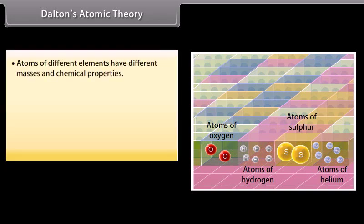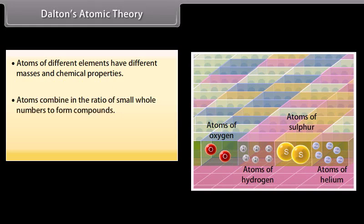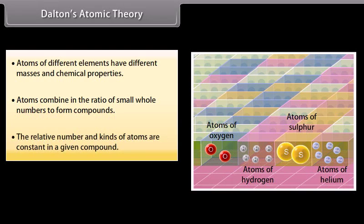5. Atoms combine in the ratio of small whole numbers to form compounds. 6. The relative number and kinds of atoms are constant in a given compound.